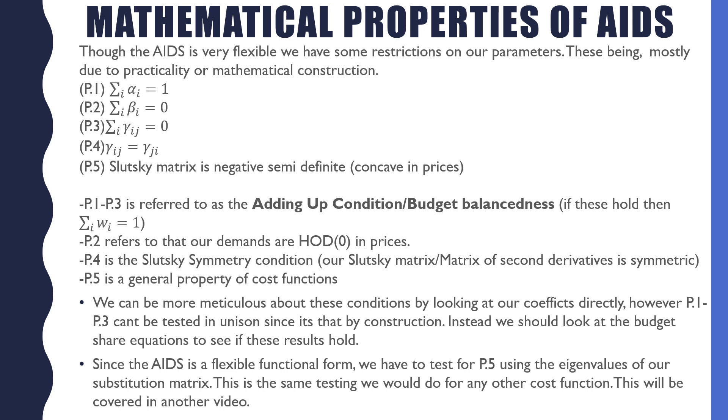P1 to P3 is referred to as the adding up condition or budget balancedness condition. This means that our budget shares will sum to 1. P2 refers to the fact that our demands are homogeneous of degree 0 in prices. P4 is the Slutsky symmetry condition. This means that our Slutsky matrix or matrix of second derivatives is symmetric. P5 is just a general property of all cost functions, this being that our Slutsky matrix is negative semi-definite.